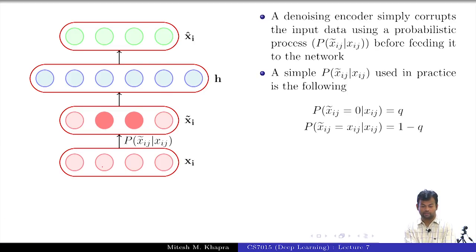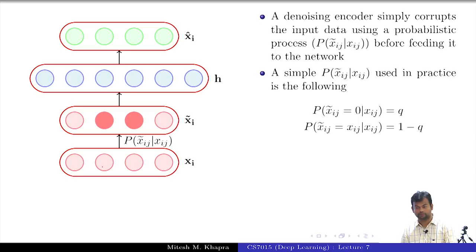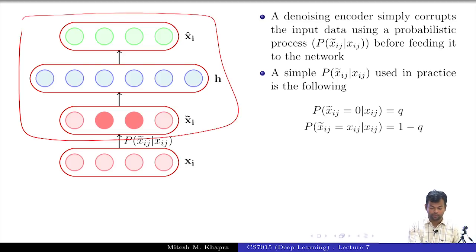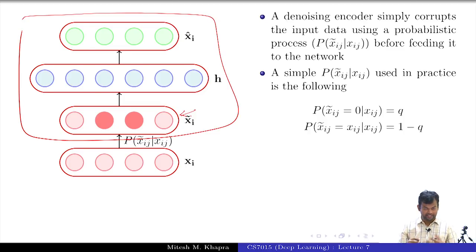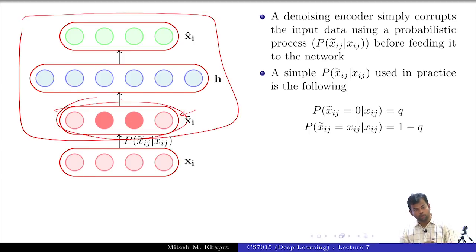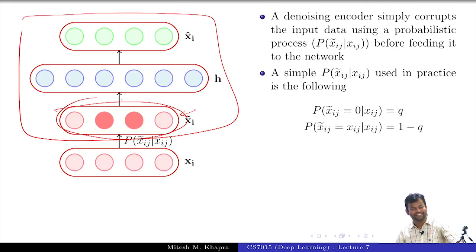What is the loss function now? Should it be x-hat_i minus x-tilde_i, or x-hat_i minus x_i? If I use x-tilde_i, from the network's perspective it is still learning to memorize the corrupted training data — it is not really helping. The network can still get away by memorizing the corrupted data, which is not what I want. So what should I do? The answer is: minimize the error between the reconstruction and the original x_i.